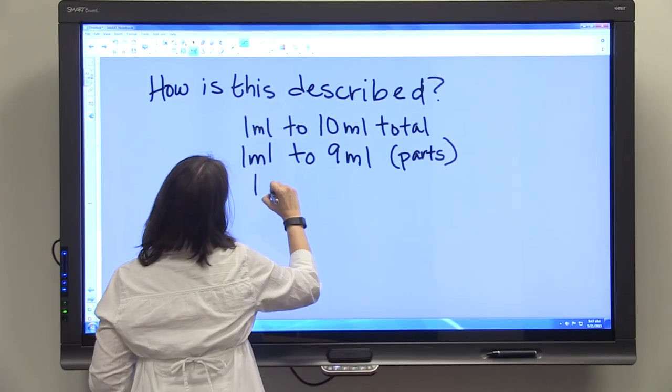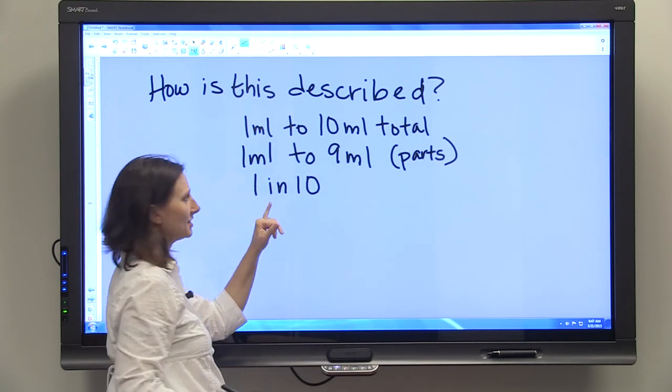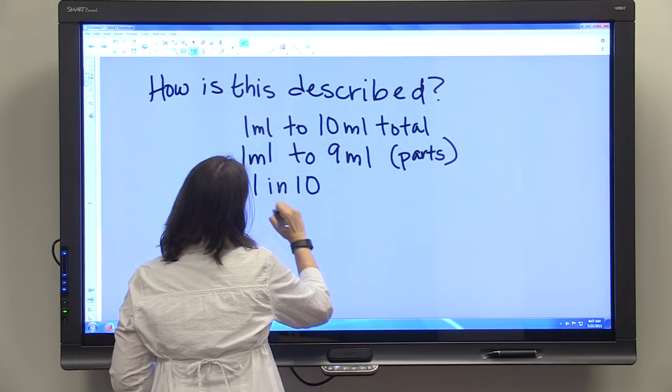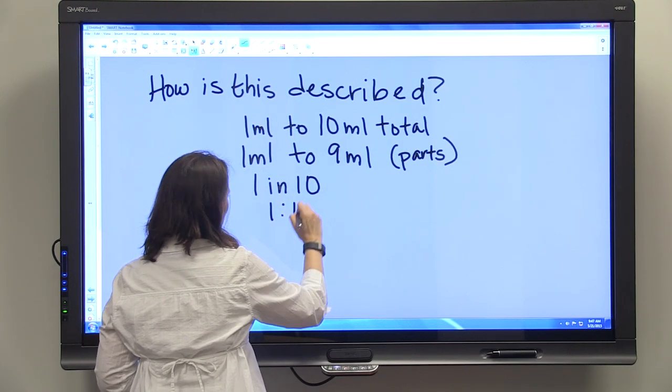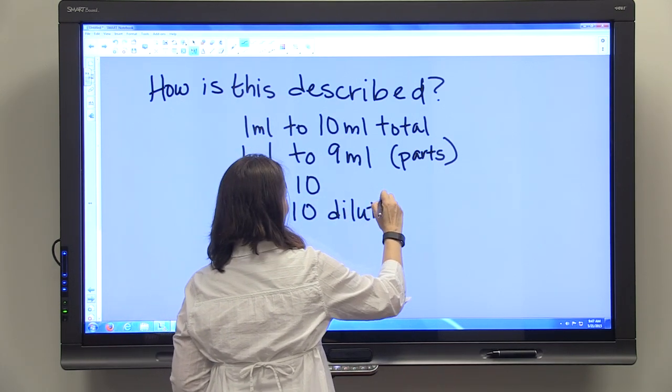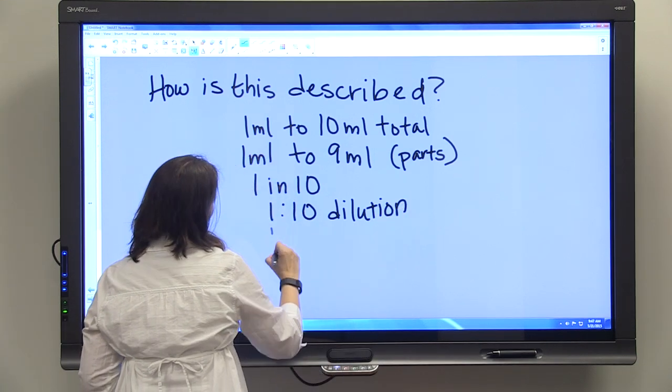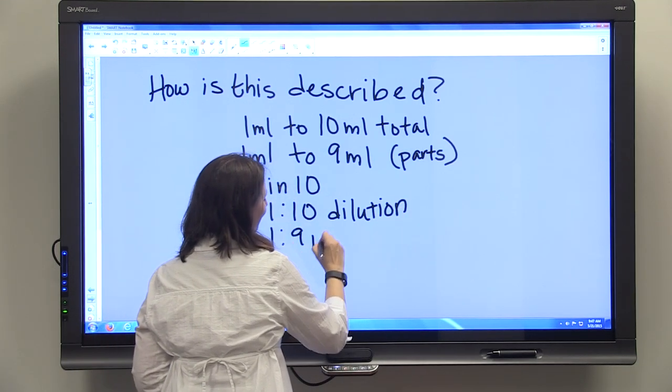It can be described as 1 in 10. That, again, tells you that 10 is the total volume. It can be described as a 1 to 10 dilution. It can be described as a 1 to 9 parts dilution.